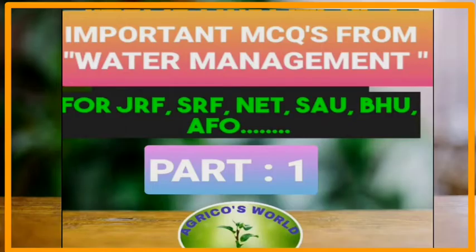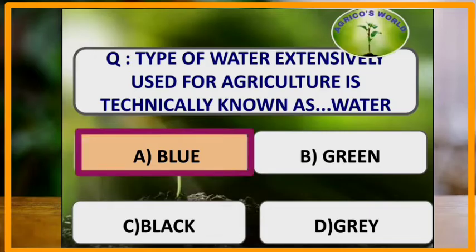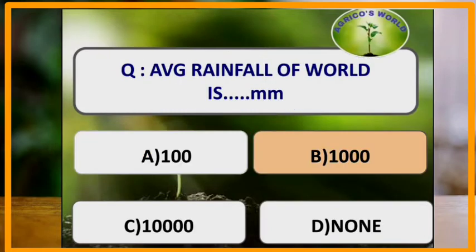Our first question: the type of water extensively used for agriculture is technically known as blue water, and the water which is present inside the plant is known as green water.